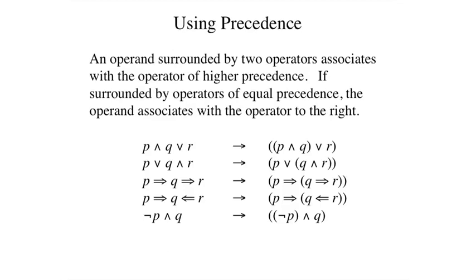The examples here show how these rules work in various cases. The expressions on the right are the fully parenthesized versions of the expressions on the left. In the first case, q in the middle is associated with the and because and has higher precedence than or.